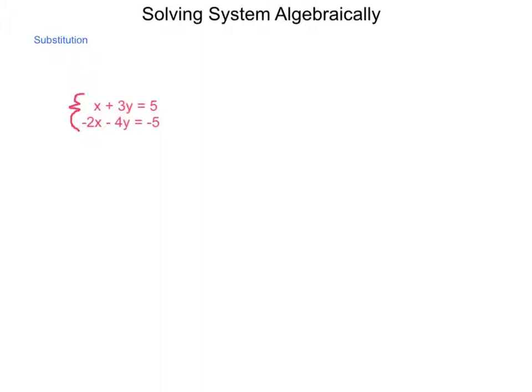In the system of equations x + 3y = 5 and -2x - 4y = -5, our first step is going to be to isolate one of the variables in one of the equations. You can see that in the first equation, the x here is isolated already as far as not having a coefficient other than 1, but we need to get it completely by itself. I'm going to solve this equation for x by subtracting 3y from each side. So I have x = -3y + 5.